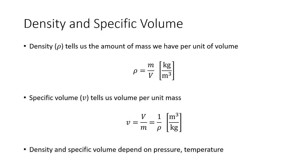So first off, density, which we're all probably more familiar with, tells us the amount of mass that we have for a given unit of volume. The formula to remember here is that rho, our density, is going to be equal to our mass of our substance divided by capital V, which is our volume. Our units here are in kilograms per meters cubed.